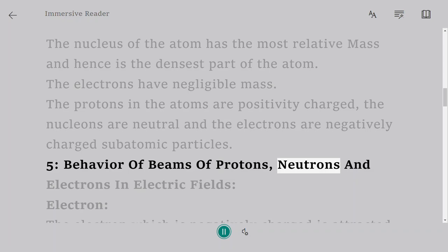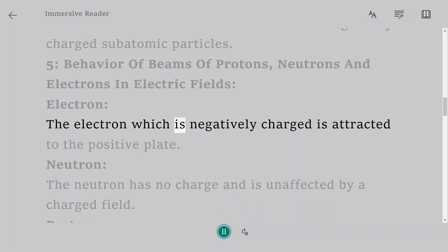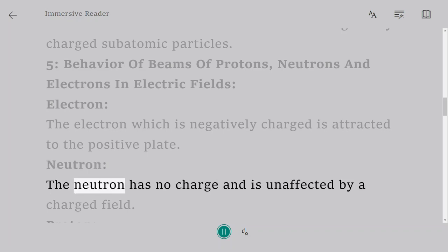Behavior of Beams of Protons, Neutrons and Electrons in Electric Fields. Electron: The electron which is negatively charged is attracted to the positive plate.